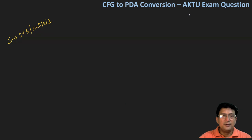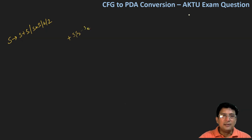सबसे पहले हमें यह देखना होता है कि जो given grammar है, क्या वो Greibach Normal Form में है या नहीं. अगर Greibach Normal Form में है तो उसके लिए rules अलग होंगे, और अगर वो Greibach Normal Form में नहीं है तो उसके rules अलग होंगे. Greibach Normal Form में तभी होता जबकि right-hand side of production एक terminal से start होता और उसके बाद non-terminals होते. लेकिन इसमें terminal और non-terminal किसी भी order में appear हो रहे हैं, तो इसलिए यह grammar Greibach Normal Form में नहीं है.